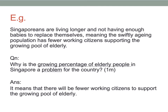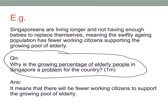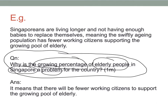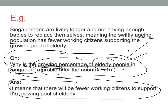Let's take a look at this example. It's exactly the same passage as the previous question — there's no difference except for how they chose to phrase the question. This time they ask: why is the growing percentage of elderly people in Singapore a problem for the country? Actually, it's no different from the previous question. We are just simply referring to the ageing population, because it's the same as your 'growing percentage of elderly people.' So the answer is exactly the same. You have to look for similar ideas or words in the paragraph to find your answer.